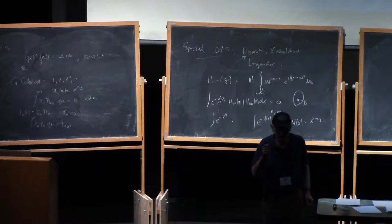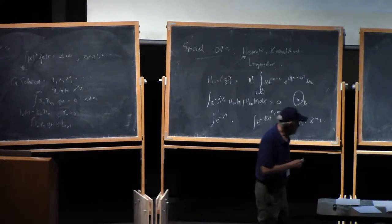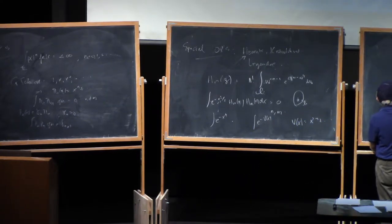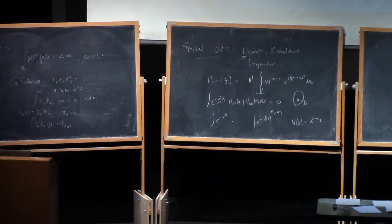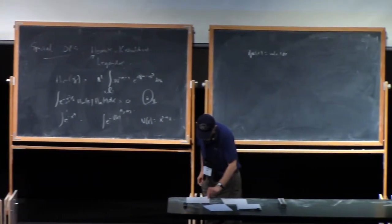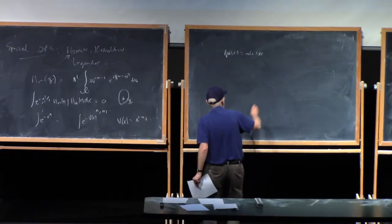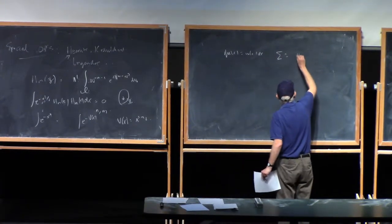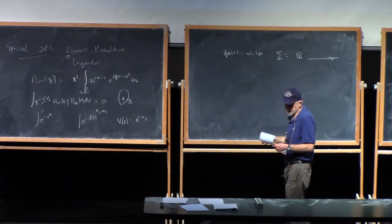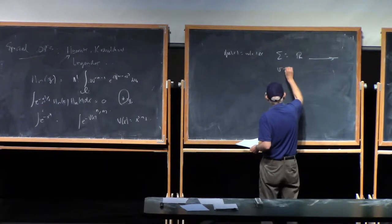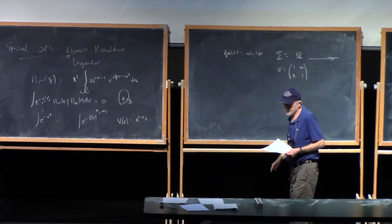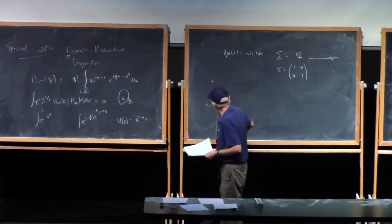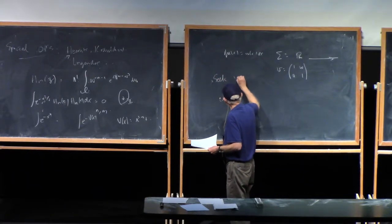Now comes what I still regard as an absolutely remarkable fact. And that is, although there is no known integral representation, there is a representation in terms of a Riemann-Hilbert problem. Let's look at weights which are absolutely continuous with respect to Lebesgue measure. Consider the following Riemann-Hilbert problem. The contour sigma is just going to be the real line oriented from minus infinity to plus infinity. And the jump matrix V is just going to be a two-by-two matrix.